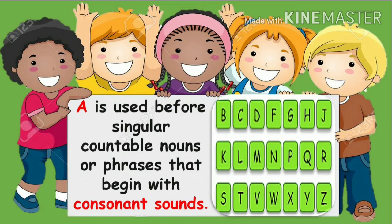And what are consonant sounds? Now students, if you notice, each and every letter has their sound. For example, B says 'b', C says 'k', D says 'd'. So when we pronounce a word, we say Ball (b), Cat (k), Dog (d). So when we pronounce any word, we use the sound of these letters.